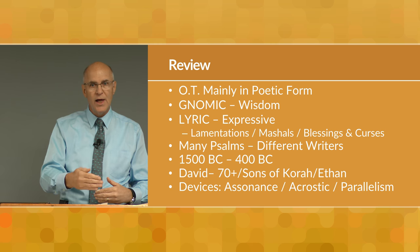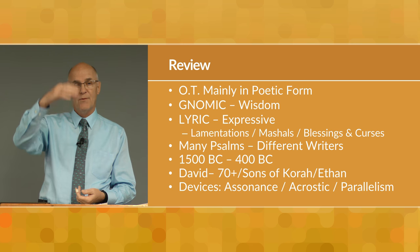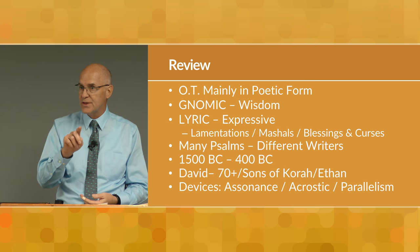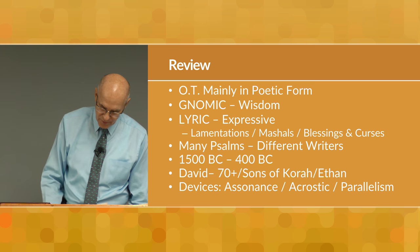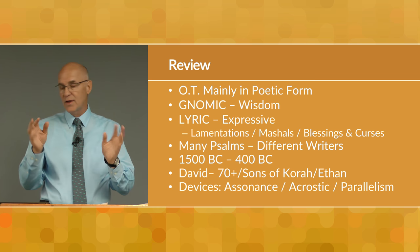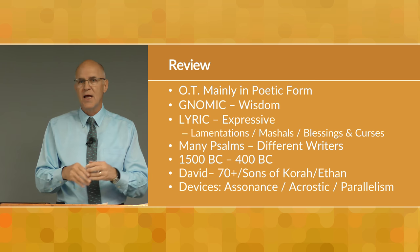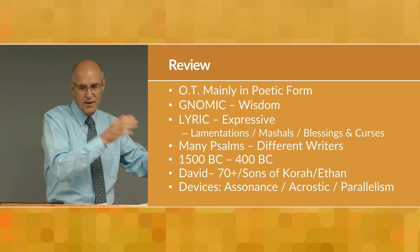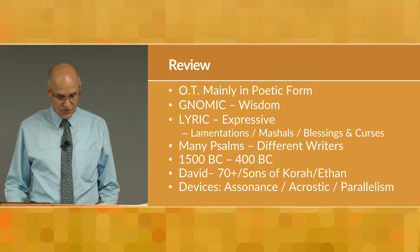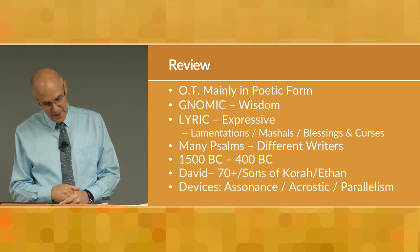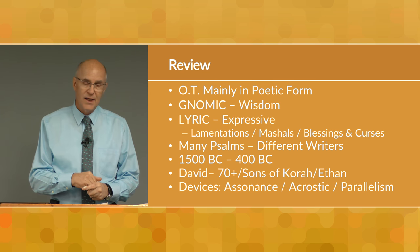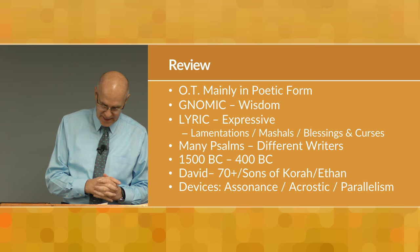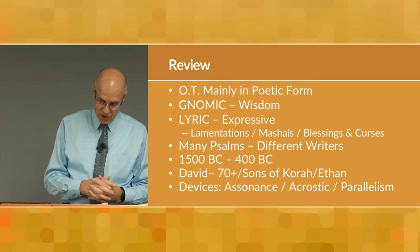The Hebrew alphabet has 22 letters, so you'd have a poem with 22 lines, each beginning with the successive letter. They used that very imaginatively — making poems with three sets of letters from the alphabet. We'll get to Psalm 119, which has many different devices like that, being the longest of the psalms.